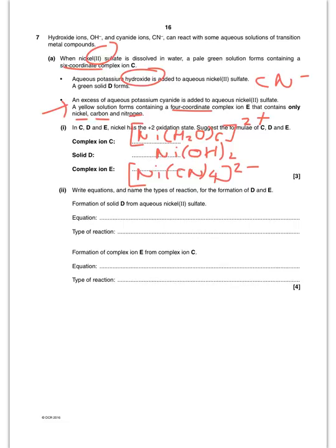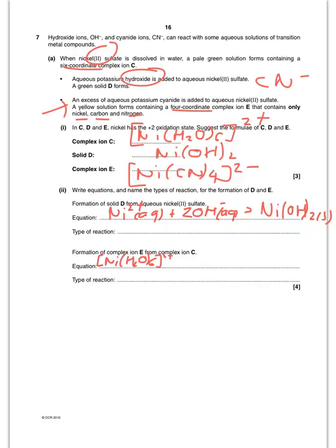Writing the equation for formation of D: Ni²⁺(aq) + 2OH⁻(aq) → Ni(OH)₂(s), which is a precipitation reaction. For formation of E from complex C: [Ni(H₂O)₆]²⁺ + 4CN⁻ → [Ni(CN)₄]²⁻ + 6H₂O. The type of reaction is ligand substitution.